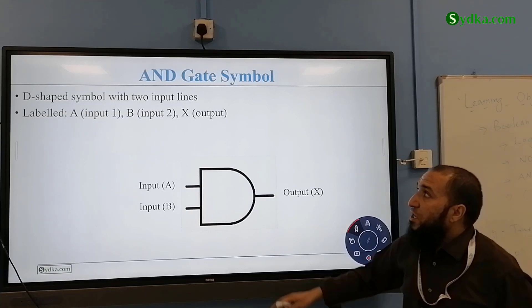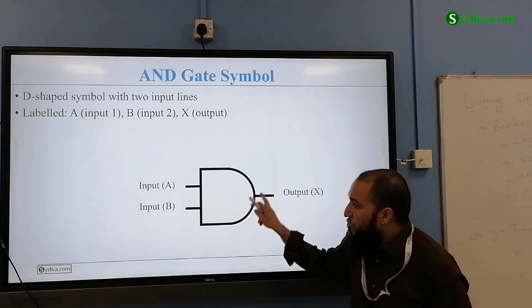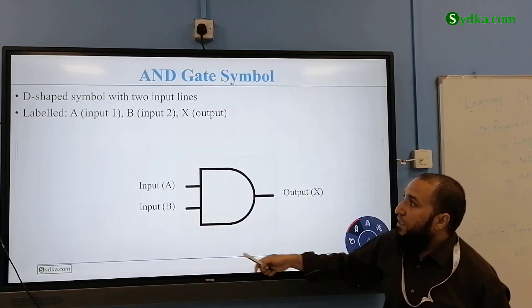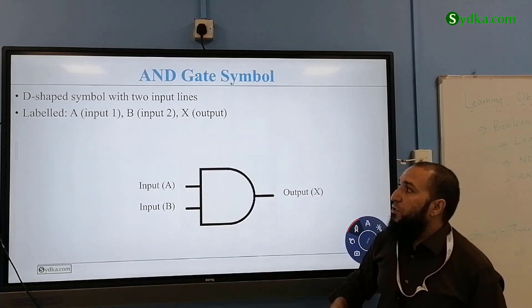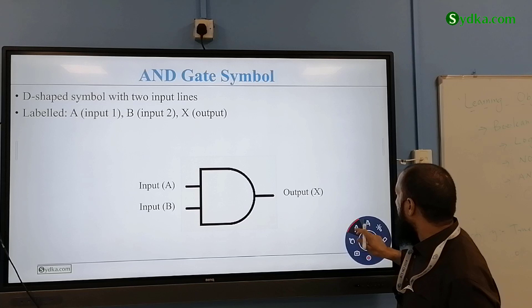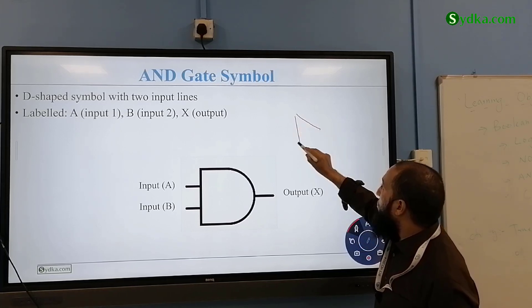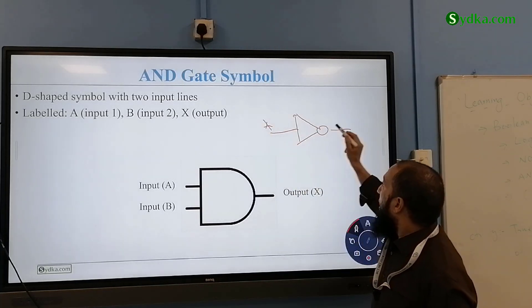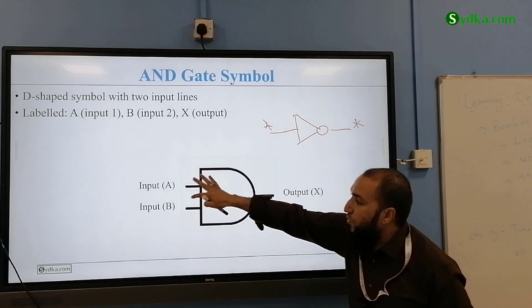The shape looks like you draw a D and then input A and B to get output. This shape symbol with two inputs labeled input A and B. The difference would be the first one was a NOT gate with input and output. In this case we have two inputs and one output.